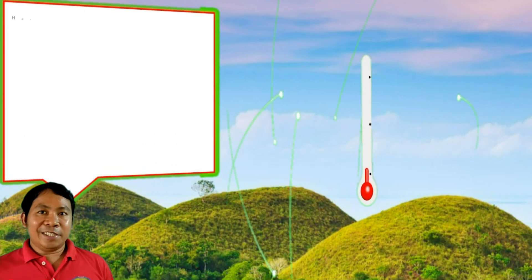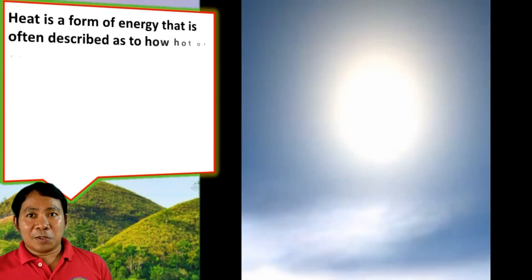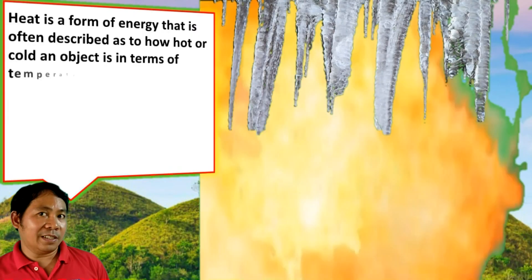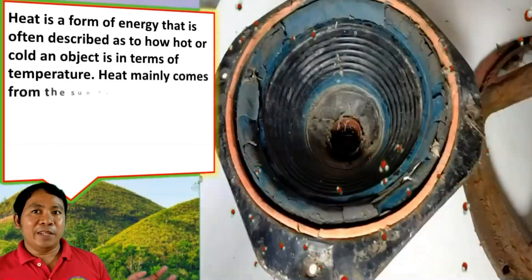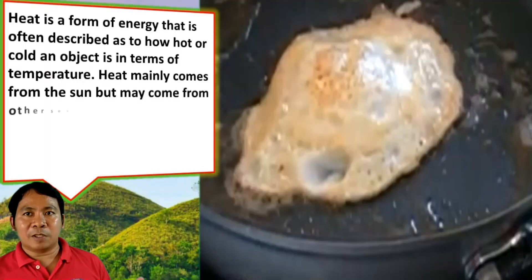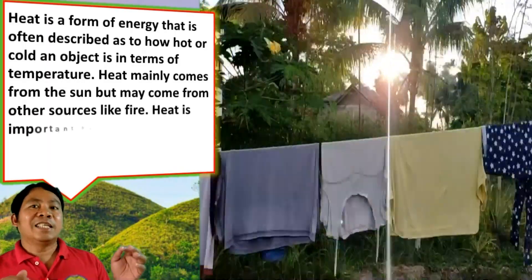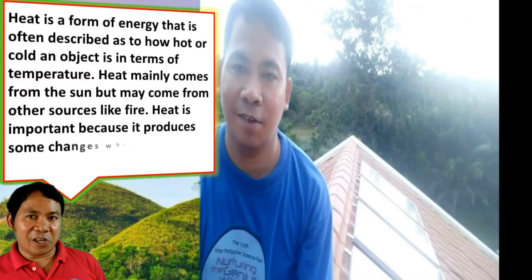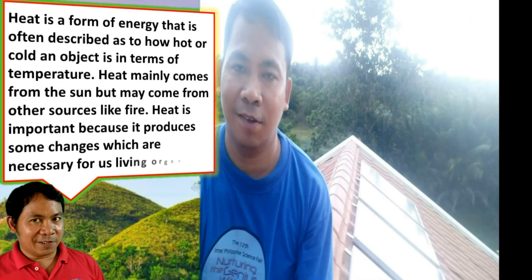Heat is a form of energy described as how hot or cold an object is in terms of temperature. Heat mainly comes from the sun but may also come from other sources like fire. Heat is important because it produces changes that are essential for living organisms.